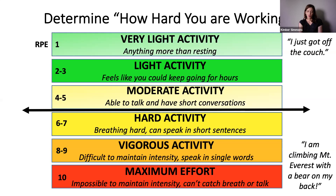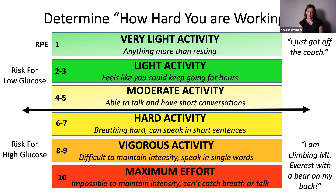The arrow between the lighter and darker yellow shows when you go from aerobic metabolism, relying mostly on fats, to anaerobic metabolism, where you're putting out more muscle glycogen and are more at risk for higher blood glucose. If you're able to talk and have short conversations, your risk is more for low blood sugars. If you're starting to breathe hard and have a hard time talking, then you're more at risk for high blood sugars.